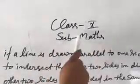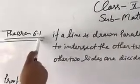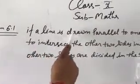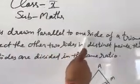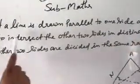Class 10th, subject mathematics, Theorem 6.1: If a line is drawn parallel to one side of a triangle to intersect